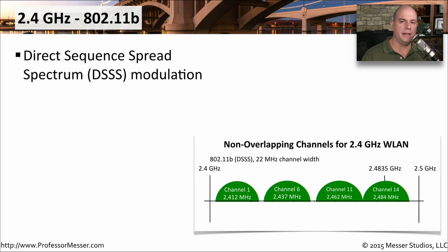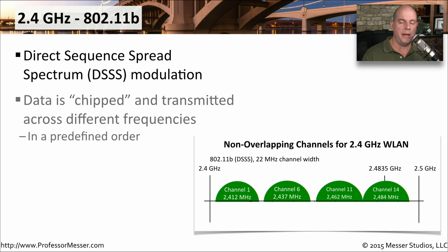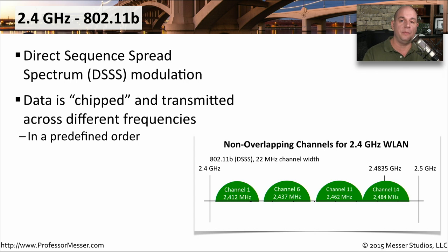Let's look at how 802.11b uses the 2.4 GHz range. 802.11b uses a modulation type called Direct Sequence Spread Spectrum, or DSSS. This is how it sends the wireless signal from one device to another over this 802.11b network. It uses a mechanism called chipping — it takes a certain chunk of data, chips it, and sends it out over a number of different frequencies. It's a very predefined order, and as this information is being sent, it's expected to be received in a very predefined order on the other side.